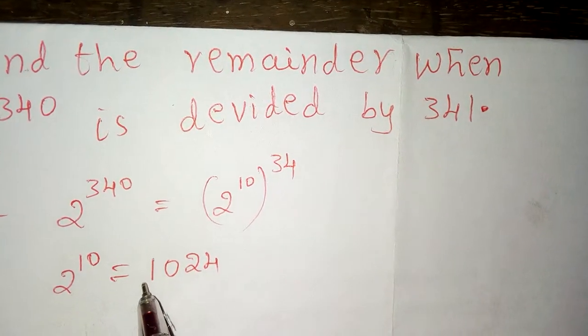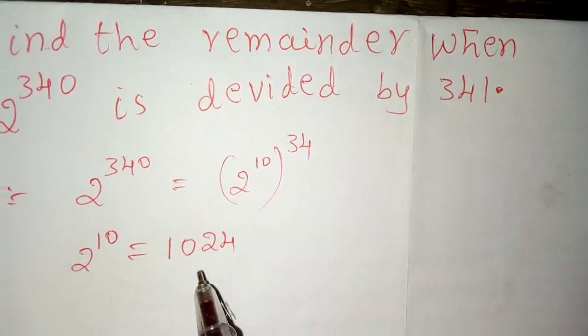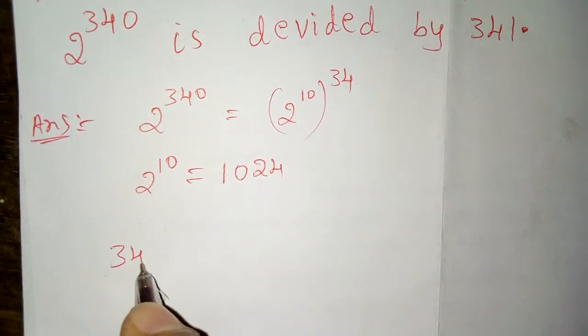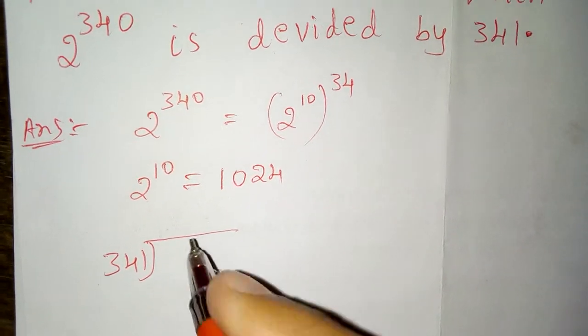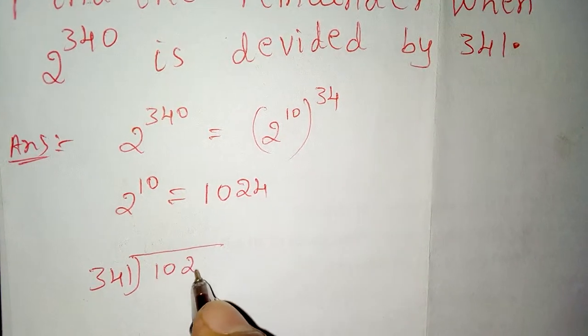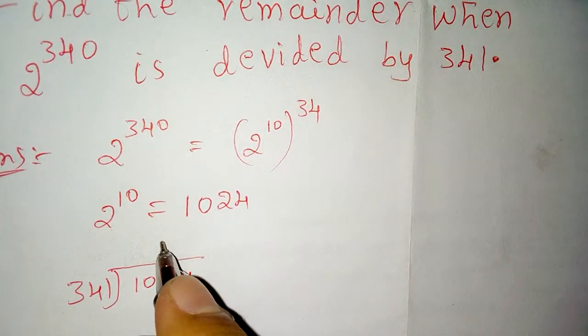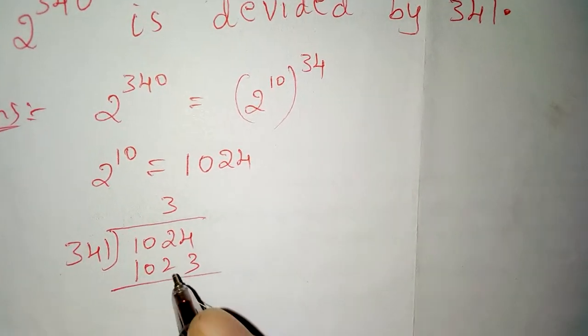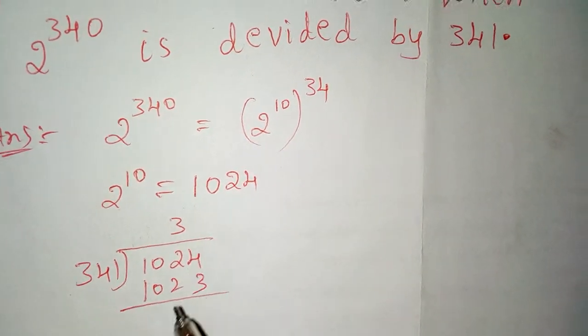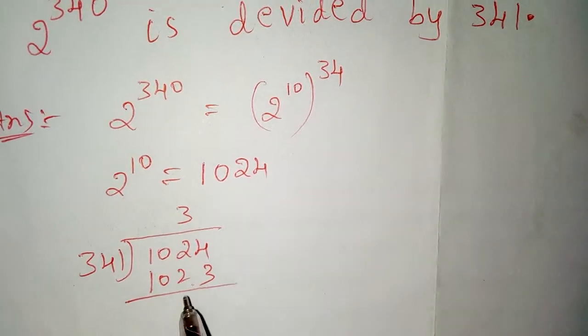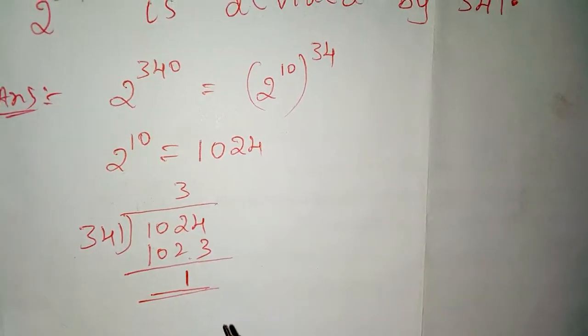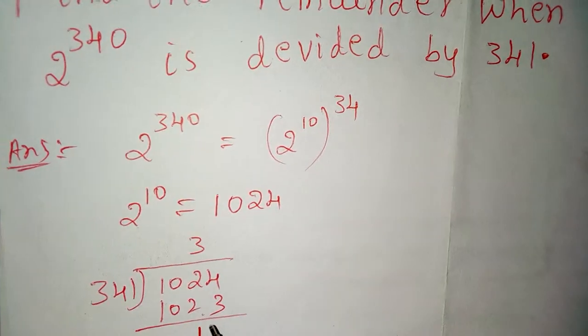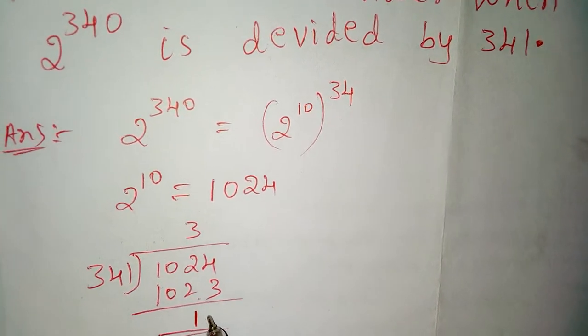When we divide 1024 by 341, 341 into 3 is 1023, the remainder is 1. Now we can write the relation in terms of congruences.